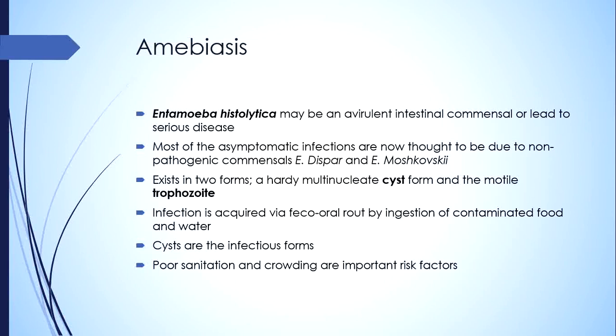Notably Entamoeba dispar and Entamoeba moshkovskii — these amoeba are non-pathogenic but they are morphologically identical to Entamoeba histolytica, and it is impossible to differentiate between them except by using molecular techniques. With the advent of current technology we are able to differentiate, and we know that most of these infections previously attributed to Entamoeba histolytica were actually due to non-pathogenic amoeba. Most infections are asymptomatic.